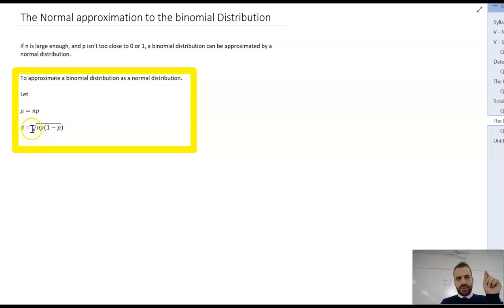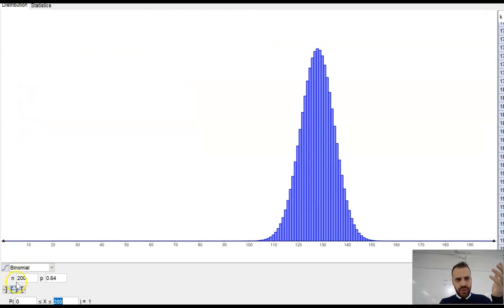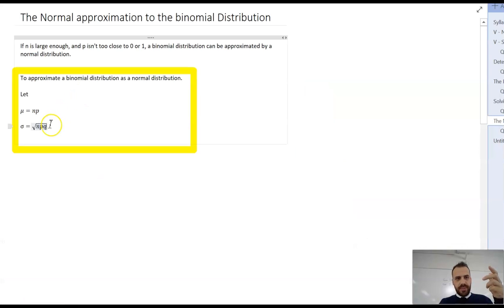And your standard deviation is equal to the square root of np(1-p). I would often write this as the square root of npq, which is the number of trials, the probability of success and the probability of failure, because failure is just 1 minus p. So in my example, that would be the square root of 200 times 0.64 times 0.36.